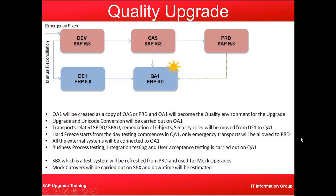The hard freeze starts from the day testing commences in QA1 — only emergency transports will be allowed to production. We put a freeze on any new changes, which must go through a rigorous process so that the number of changes is minimized drastically. All external systems will be connected to QA1 to make sure all interfaces work fine. Business process testing, integration testing, and user acceptance testing are carried out in this QA1 system.